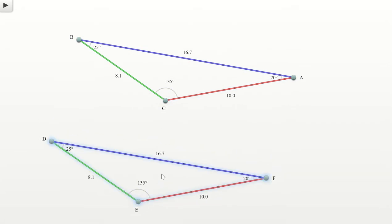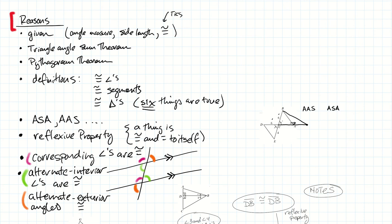We'll call this the side-side-side triangle congruence conjecture, and we're going to recognize this as a third way — besides the definition — to establish that two triangles are congruent. You should flip to the place in your notebook where you keep your compiled list of reasons. I would add it in the same area as angle-side-angle and angle-angle-side. If you've got three pairs of congruent sides in two different triangles, those triangles appear to be congruent.